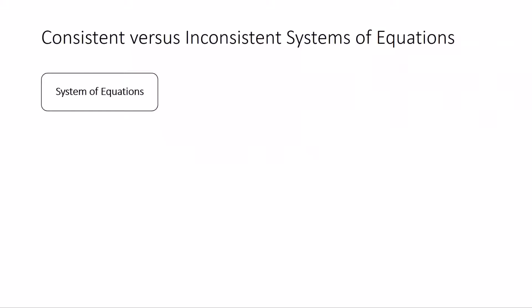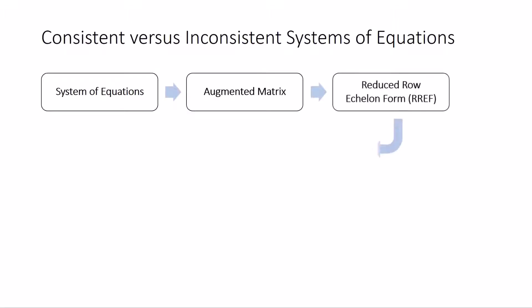We can determine whether a system is consistent as well as identify the type of solution for a consistent system from the reduced row echelon form of the augmented matrix. Here are the steps. First, construct the augmented matrix of the system. Then carry it to reduced row echelon form, or RREF.